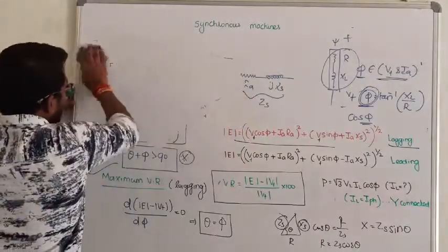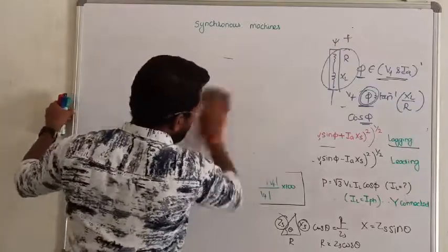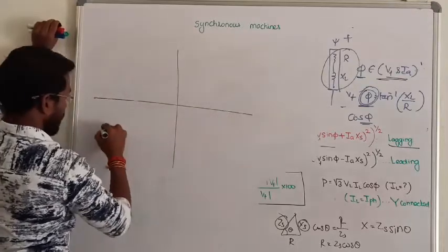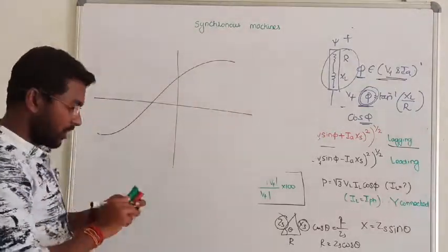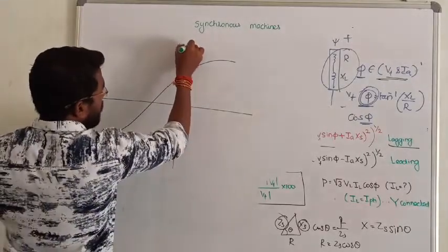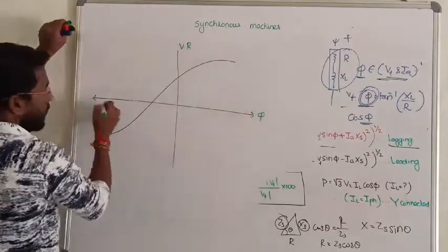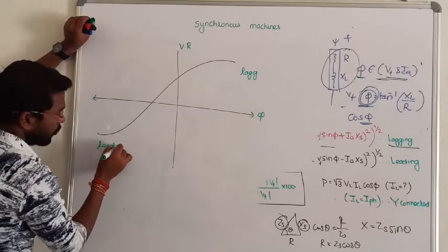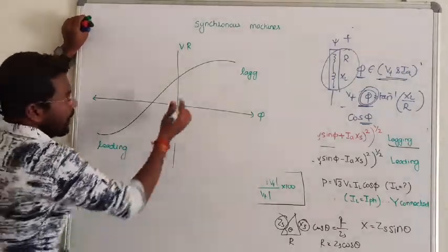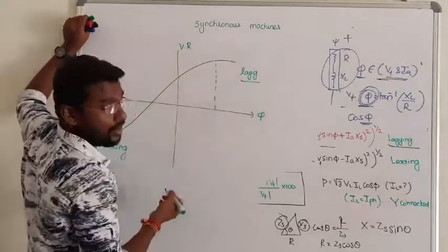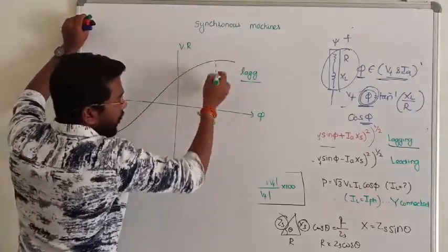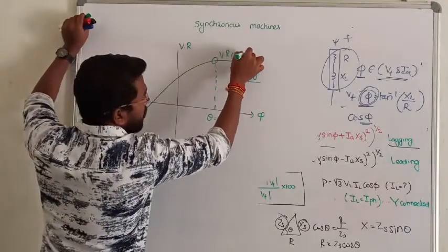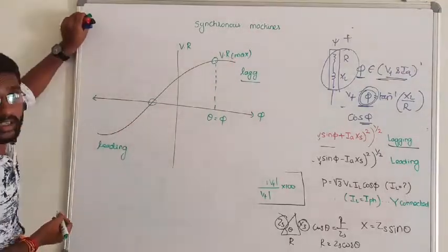Now the voltage regulation curve. Let me draw the approximate voltage regulation curve. On the x-axis, we are keeping power factor. On the y-axis, voltage regulation. This is for lagging power factor, this is for leading power factor. Voltage regulation is minimum or zero for leading power factor. Maximum voltage regulation occurs at lagging power factor at the theta value. For leading power factor, we can have zero regulation condition.